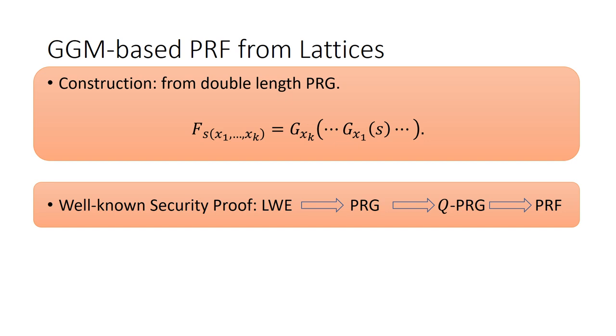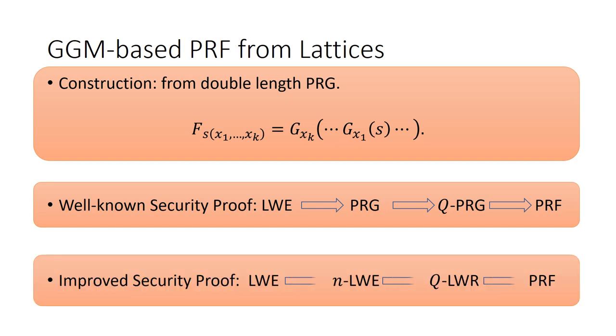As we always need to use hybrid argument to prove PRG to Q-PRG, the reduction loss Q seems to be inherent. In this paper, we adopt a novel approach from LWE to NLWE to QLWR to PRF. Here, we manage to eliminate the reduction loss Q from NLWE to QLWR.